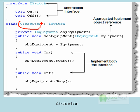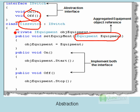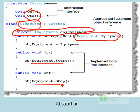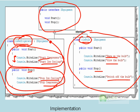Now let's look at the abstraction part. My abstraction is a Switch, and the Switch has on and off. Internally, I aggregate the IEquipment interface in the Switch class and just call start and stop. I don't know which equipment I'm starting or stopping, but because I use the common IEquipment interface, I can start and stop any equipment. This is how the interface allows us to separate the abstraction from the implementation.